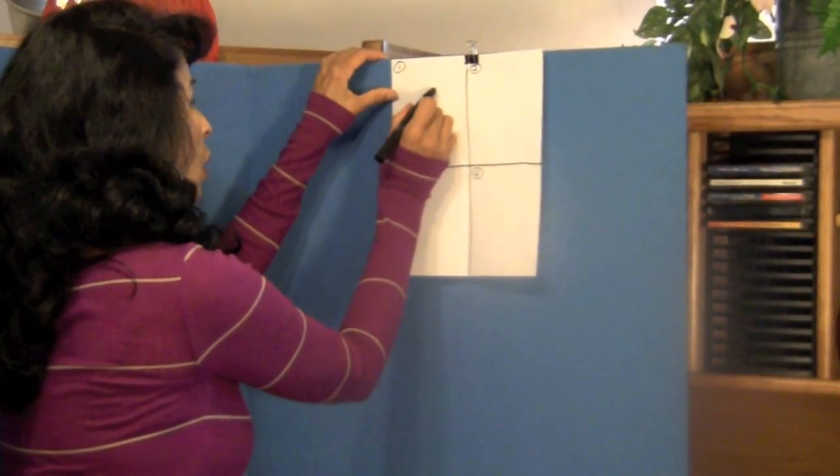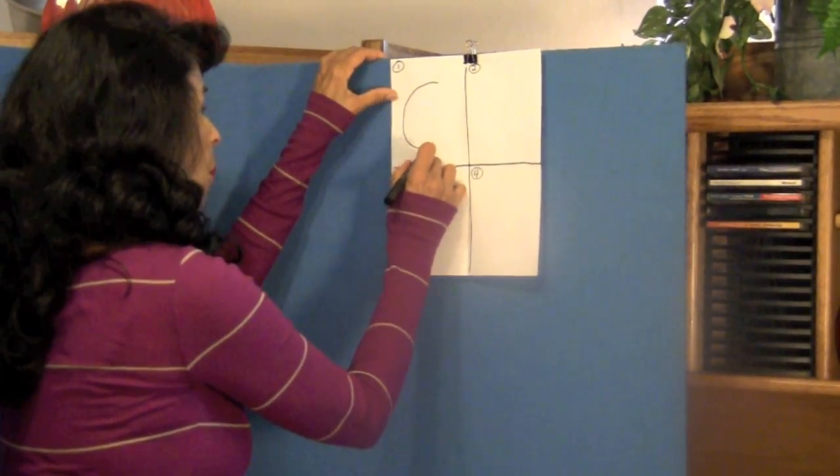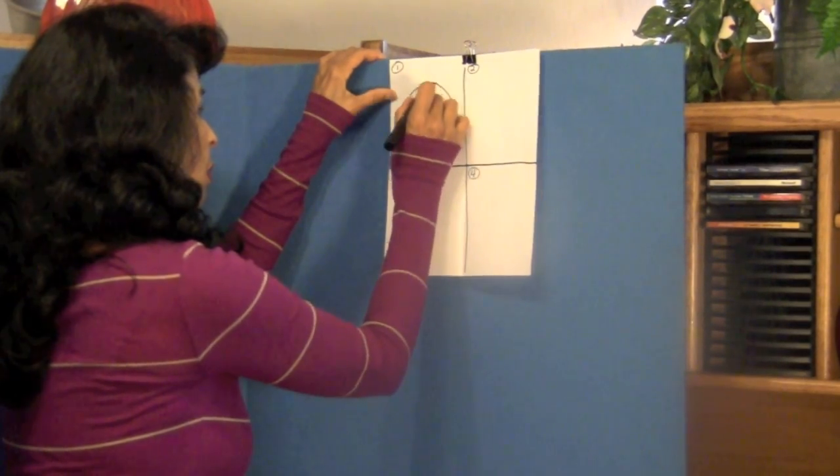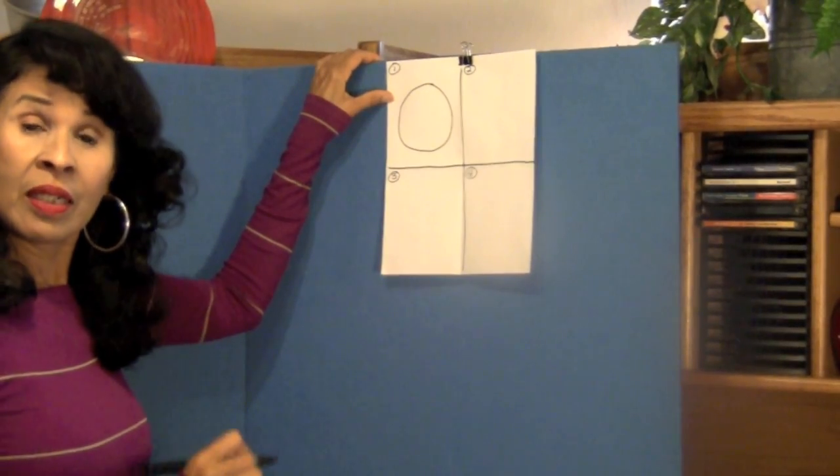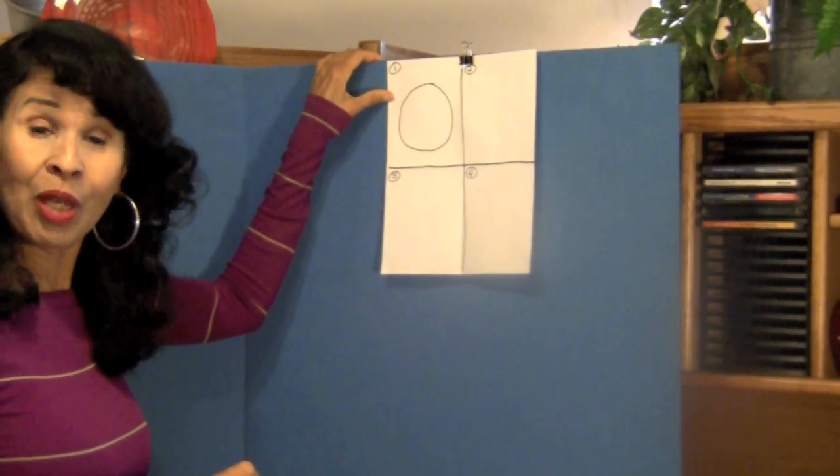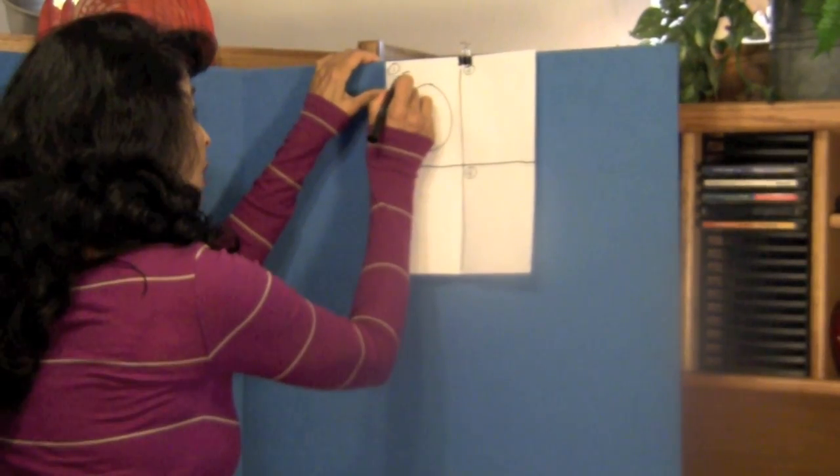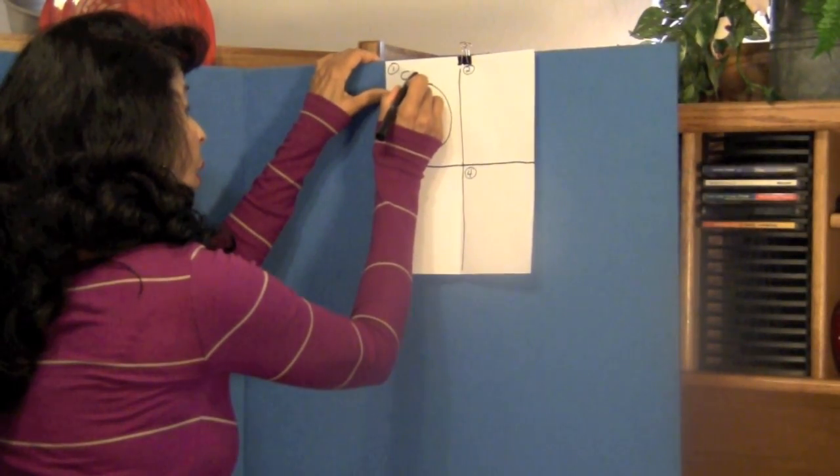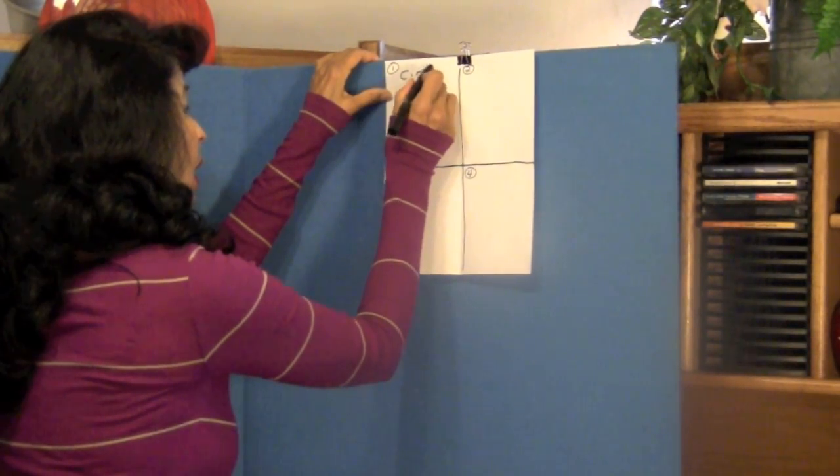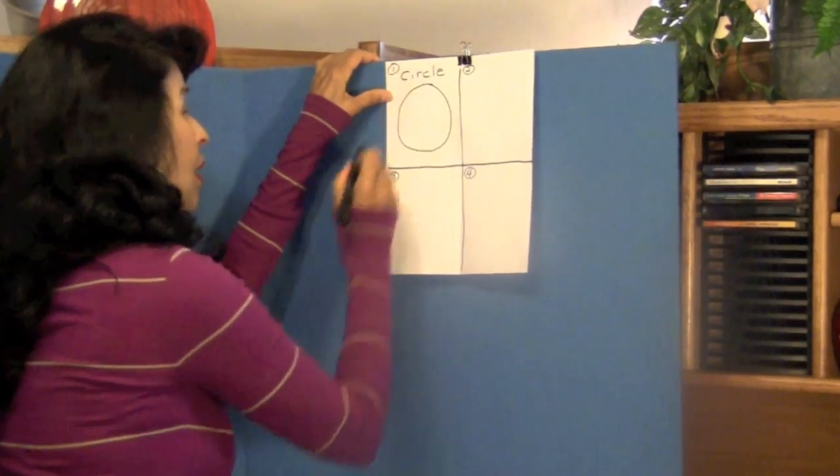In box number one draw a round circle, a big large round circle. Boys and girls tell me how to spell circle. Capital C-I-R-C-L-E. Circle.